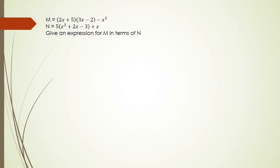Alright, so the way you'd approach this question, even if you don't know how to start, is expand M and expand N and simplify. So the first thing I'm going to do is expand M. So M, we've got 2x plus 5 multiplied by 3x minus 2 minus x squared. First thing I'm going to do is expand that quadratic.